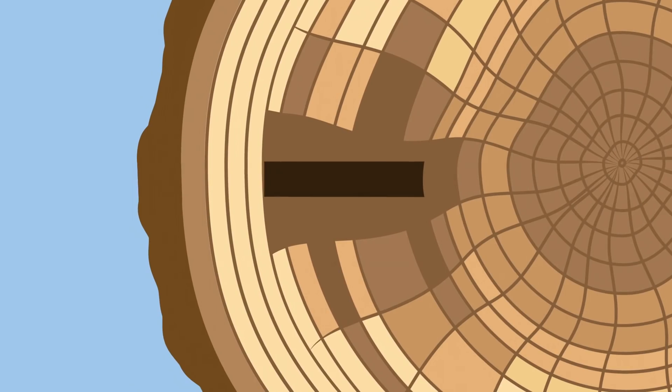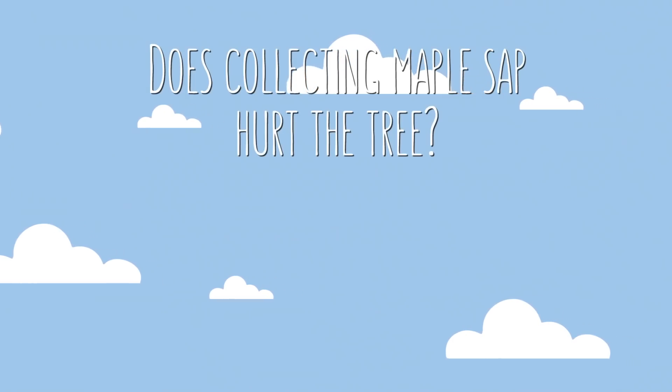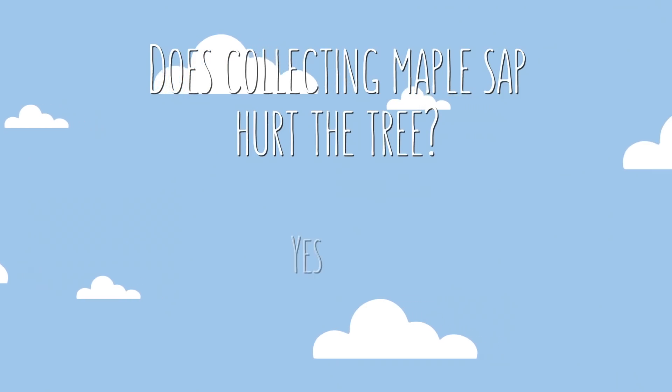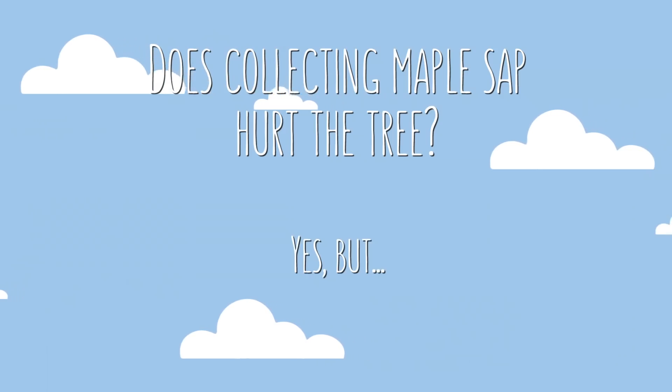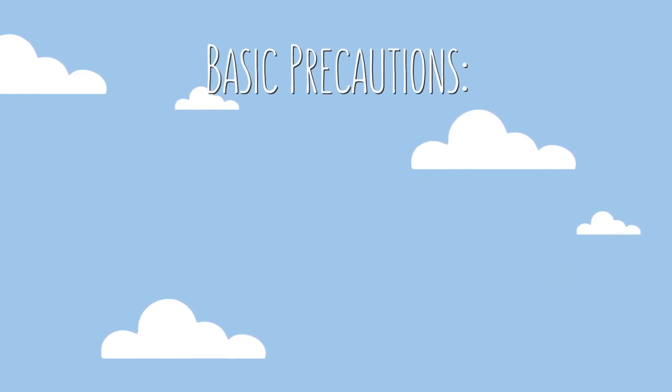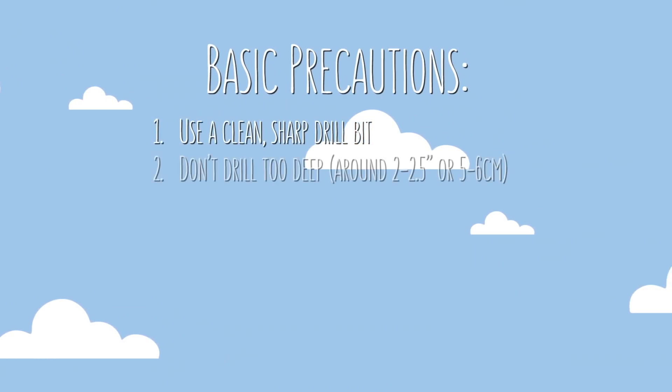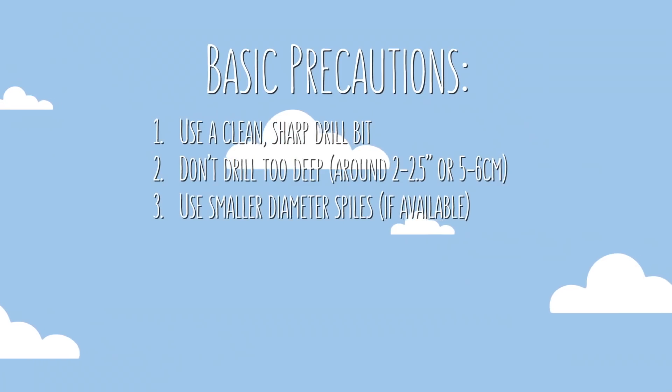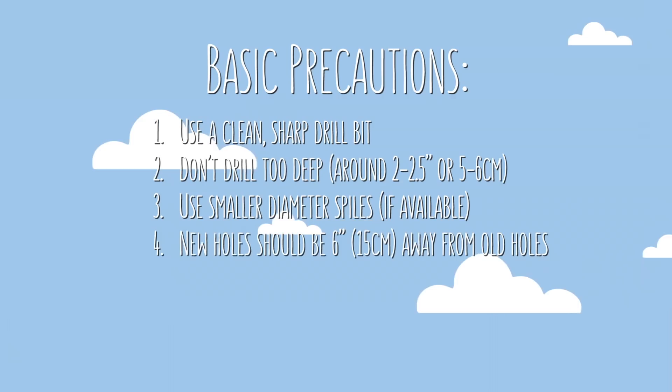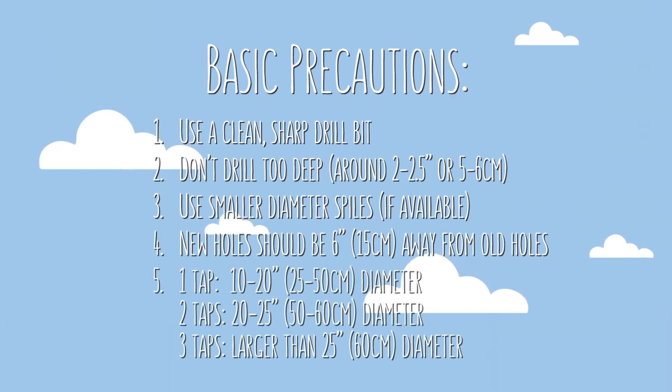So with all of this in mind, I think we're finally prepared to address the question. Does collecting maple sap hurt the tree? And honestly, I think the answer is a pretty definitive yes. But luckily, it's also usually an injury that the tree can readily recover from. And that's why it's so important to follow some basic precautions, like using a clean, sharp drill bit, not drilling the holes too deep, and using smaller diameter spiles when possible. Plus, you should also space new holes at least six inches away from the previous ones. And make sure that your tree is even large enough to support tap holes in the first place.